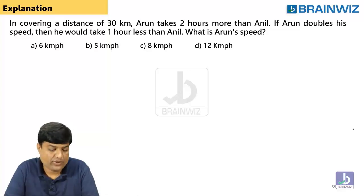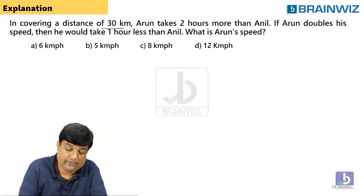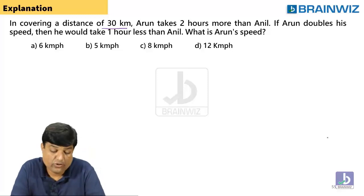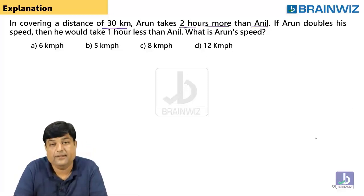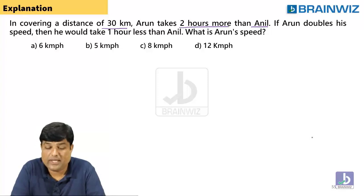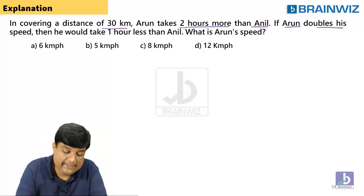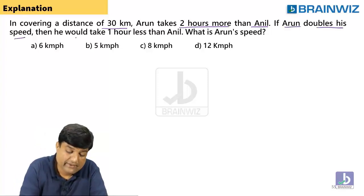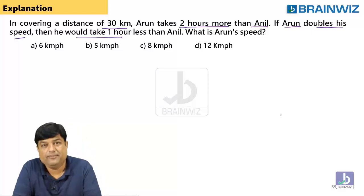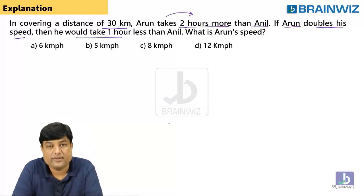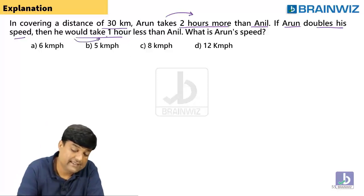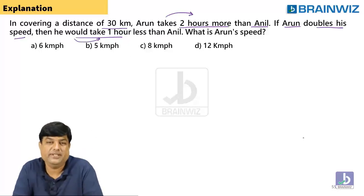Let's try to have an explanation of this question. In covering a distance of 30 km, Arun takes 2 hours more than Anil. If Arun doubles his speed, then he would take 1 hour less than Anil. So at normal speed he is taking 2 hours extra, and at double speed he is taking 1 hour less than Anil. What is Arun's speed?